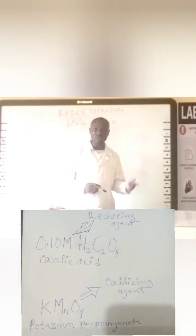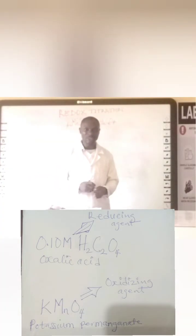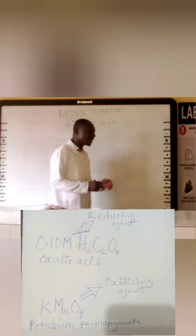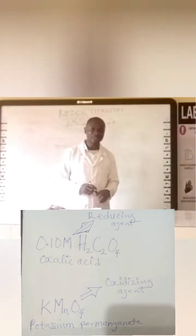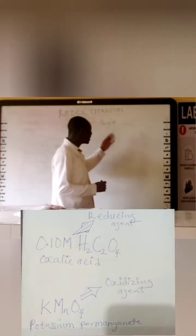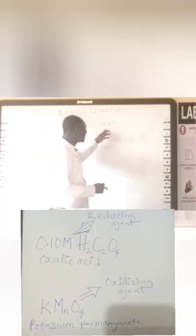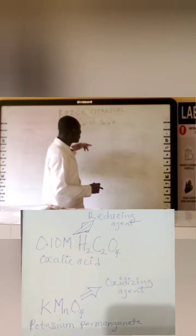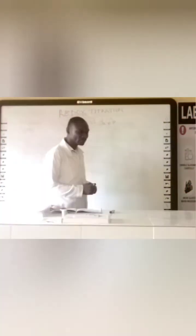The one that is reducing the other component is called the reducing agent, while the one being reduced is called the oxidizing agent, because it is also oxidizing the reducing agent. Between potassium permanganate and oxalic acid, potassium permanganate is the oxidizing agent, while oxalic acid is the reducing agent.